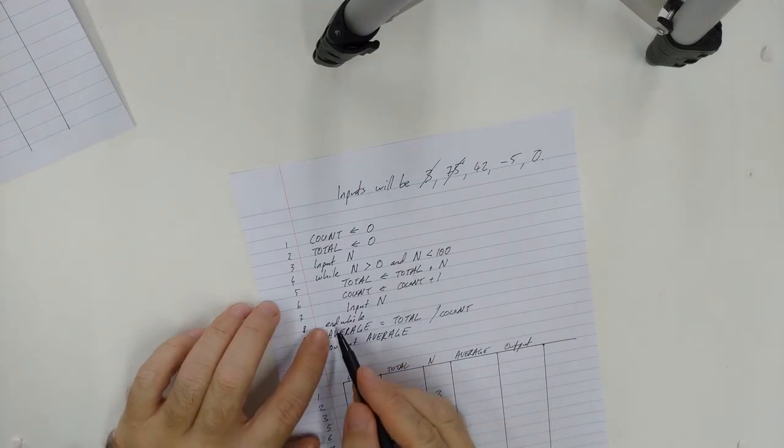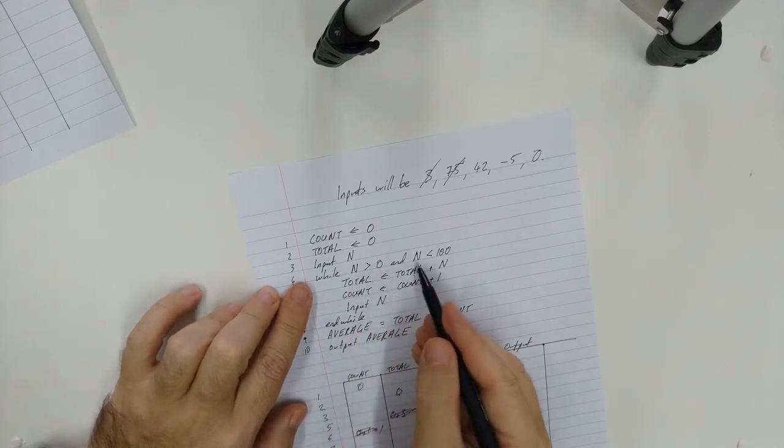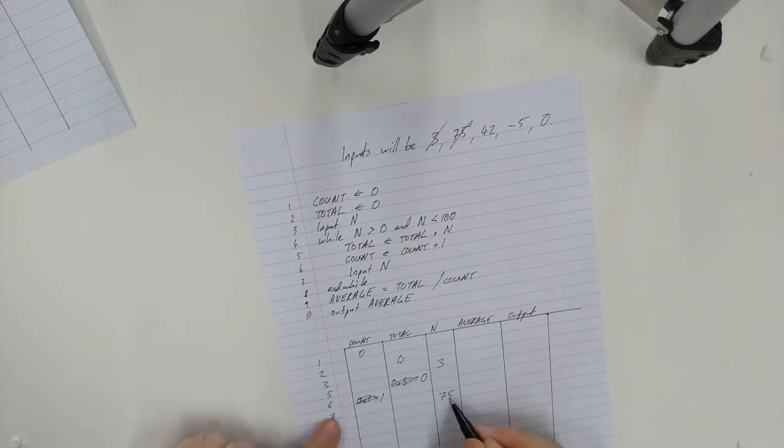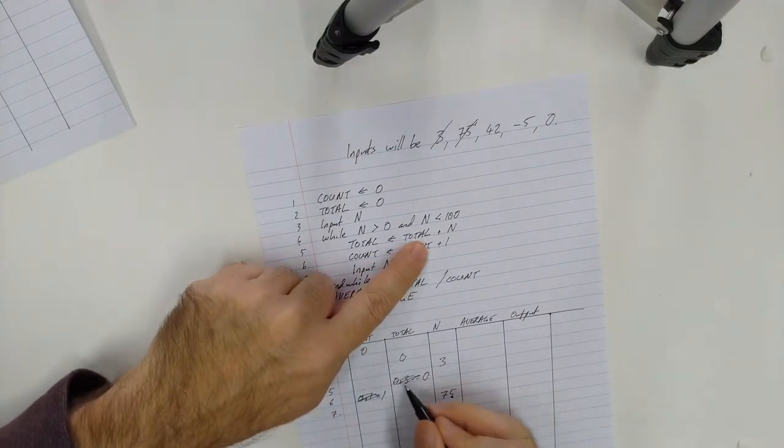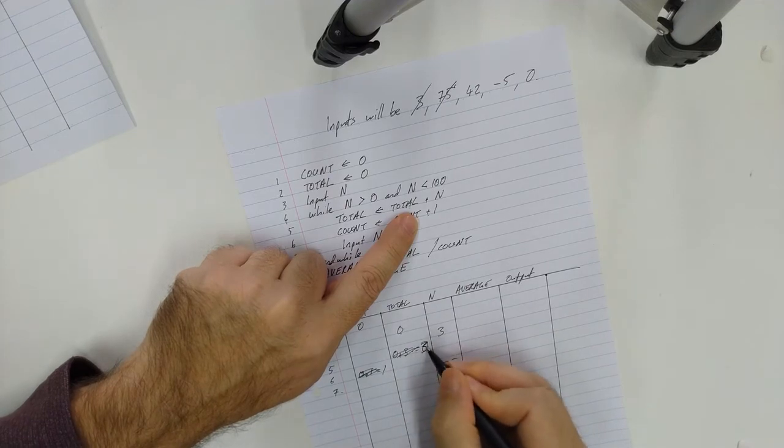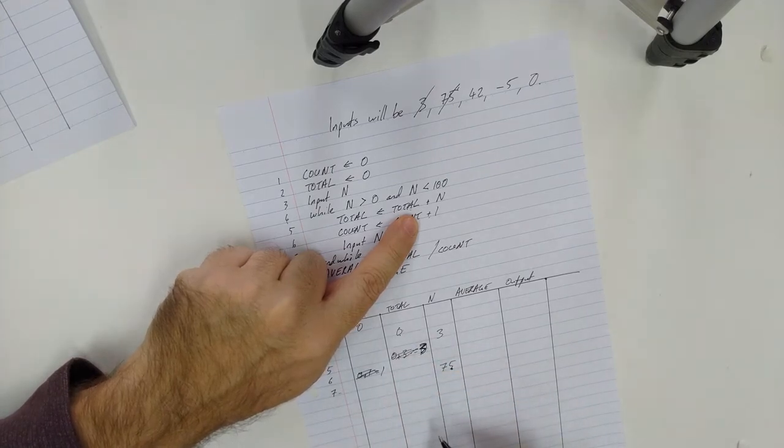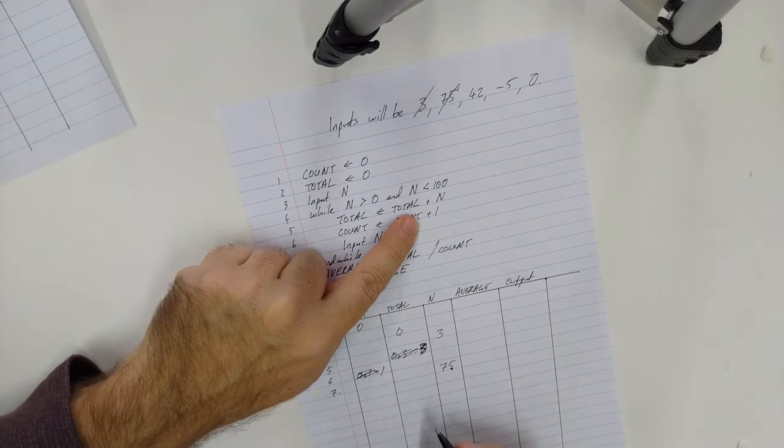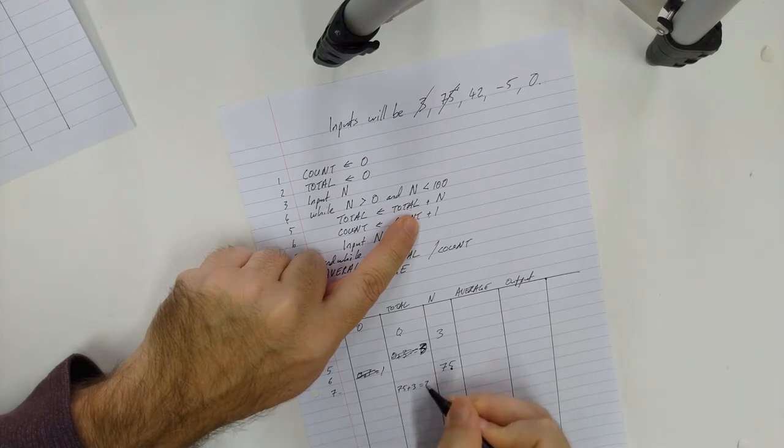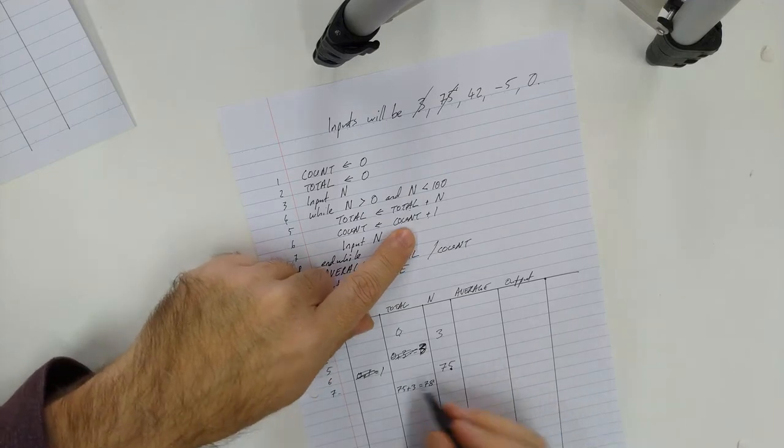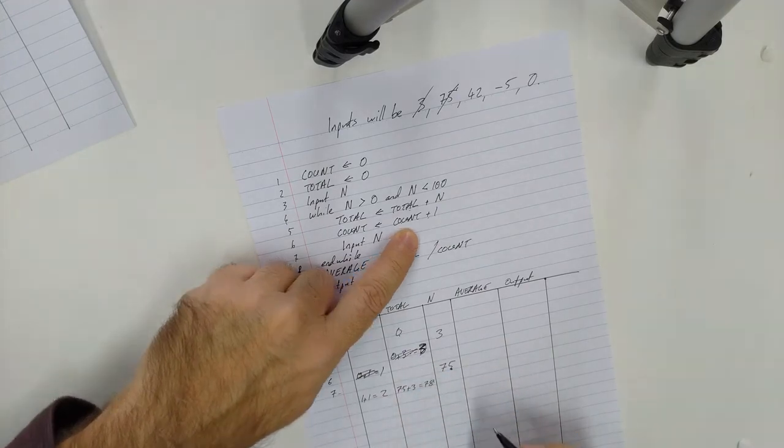Alright. End while. So let's see. Have we finished the while loop? Back up to number four. n bigger than zero and less than 100. Yes, it is. And so I'm going to continue in this loop. Total is equal to total plus n. Oops. Did you spot this error here? Zero plus three. That should be a three. This is where having your calculations in here doesn't always necessarily mean you get your arithmetic right, especially when you're doing it under pressure or trying to record a video. So 75 plus three, 75 plus three is equal to 78. Count is equal to count plus one. So one plus one is equal to two. You were probably screaming at me for the last five minutes. That's not zero.